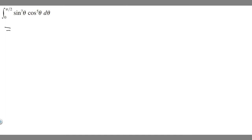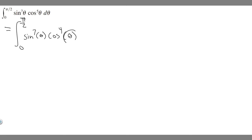So essentially what we're going to do is rewrite the integral from 0 to π/2: we leave sine to the seventh power of θ, then take one cosine out of the fifth power, so it becomes cosine to the fourth power of θ, and we have a cosine of θ left over, then dθ. All we did was take one off the cosine exponent.